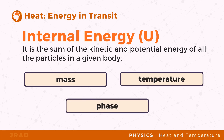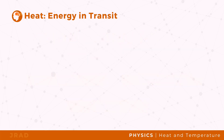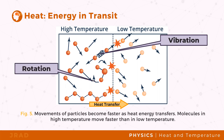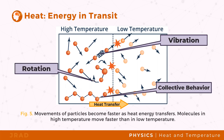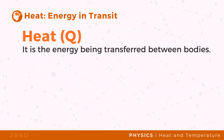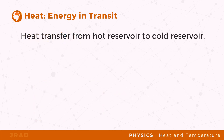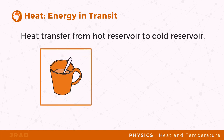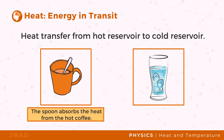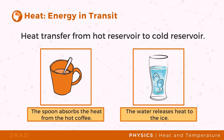Movements of particles become faster as heat energy is transferred. Molecules at high temperature move faster than those at low temperature. Heat is known as the energy in transit, for it is being transferred between bodies from high to low temperature. A body contains internal energy, but not heat. When an object is heated, energy is given off to the object. For example, when stirring a cup of hot coffee with a spoon, the spoon absorbs the heat from the hot coffee.